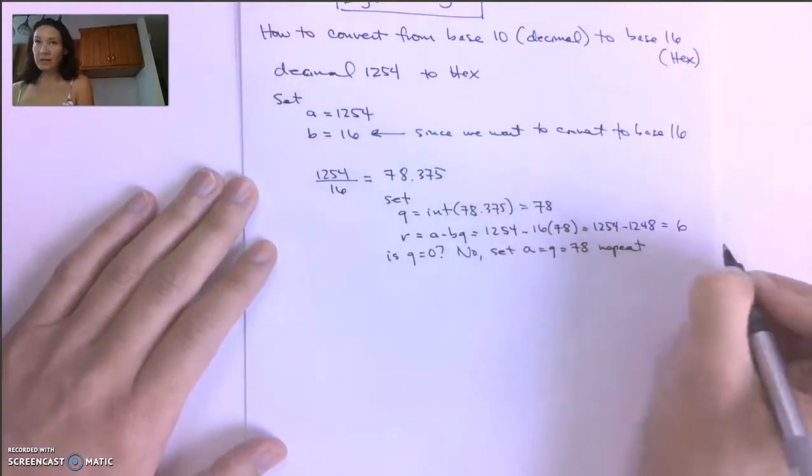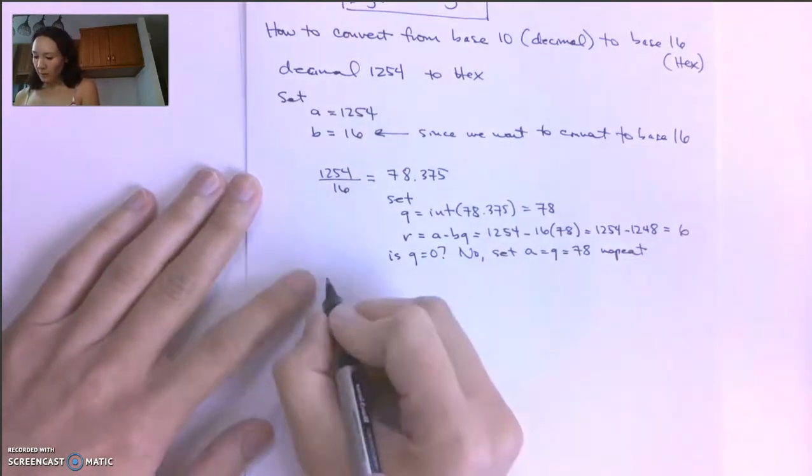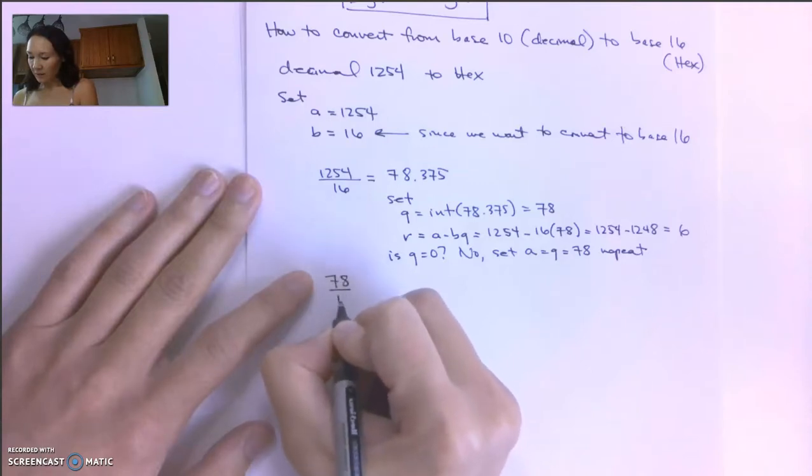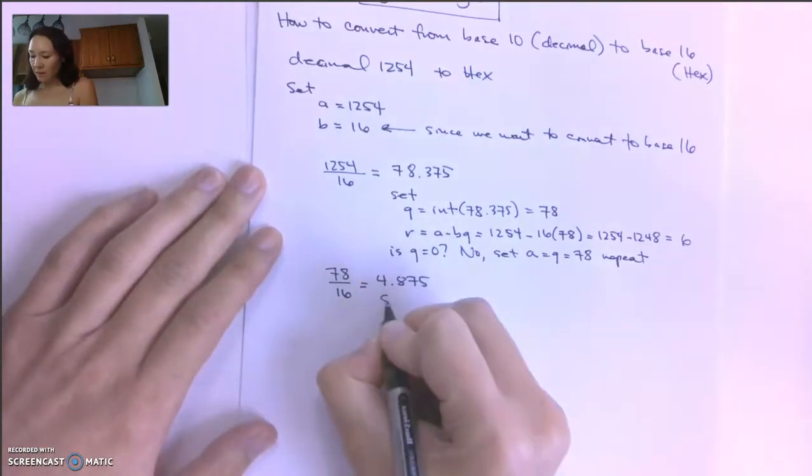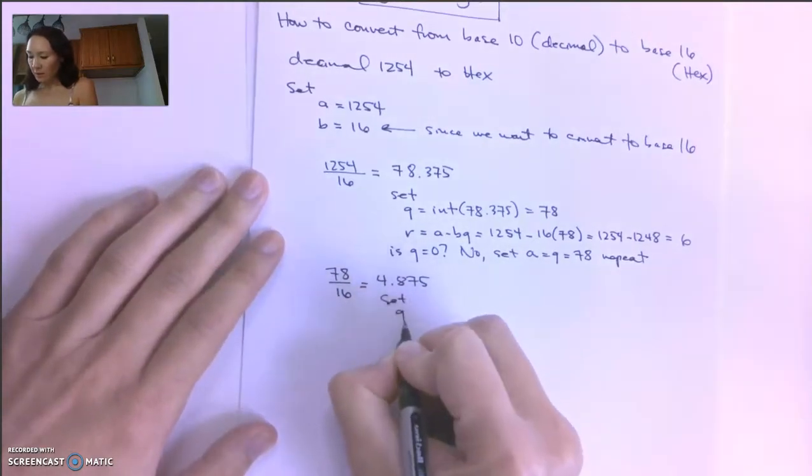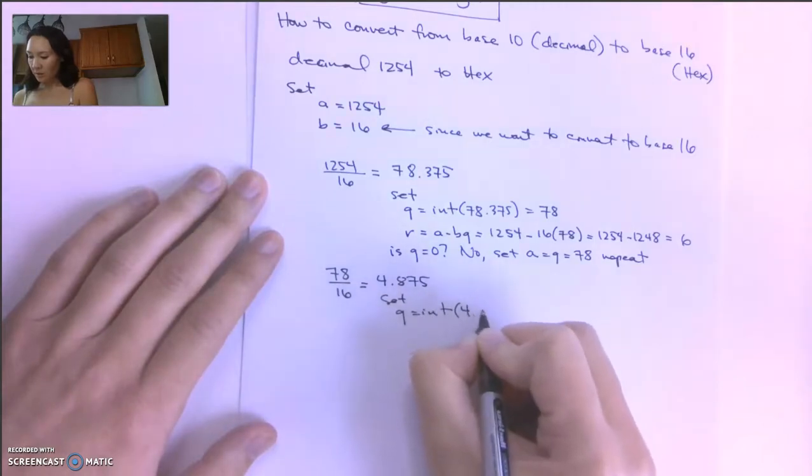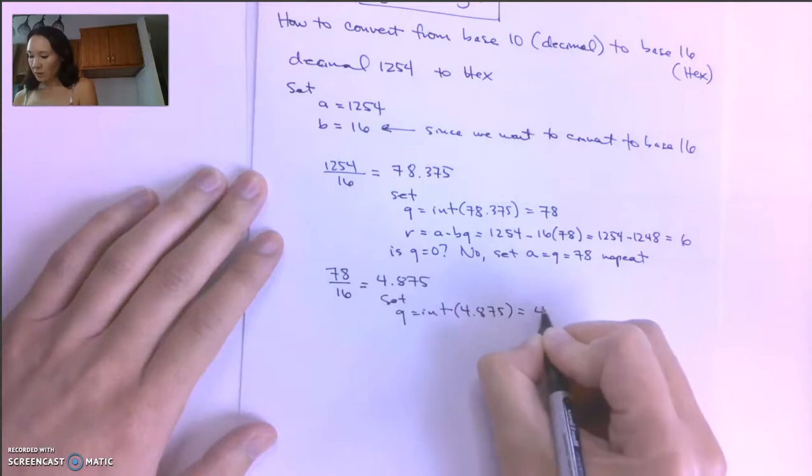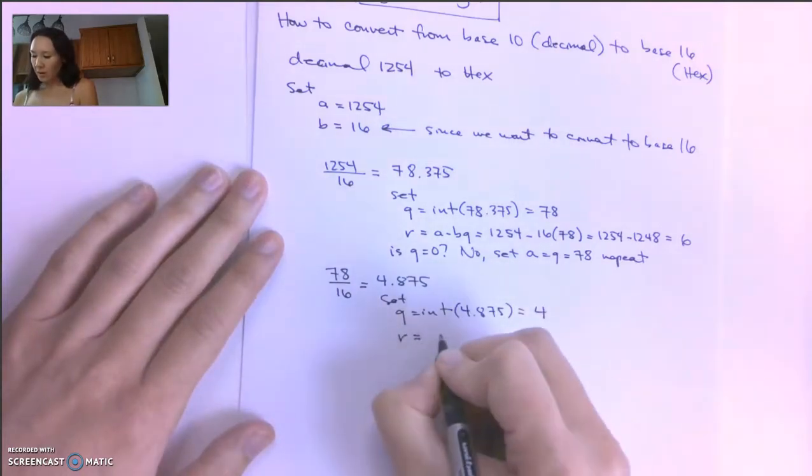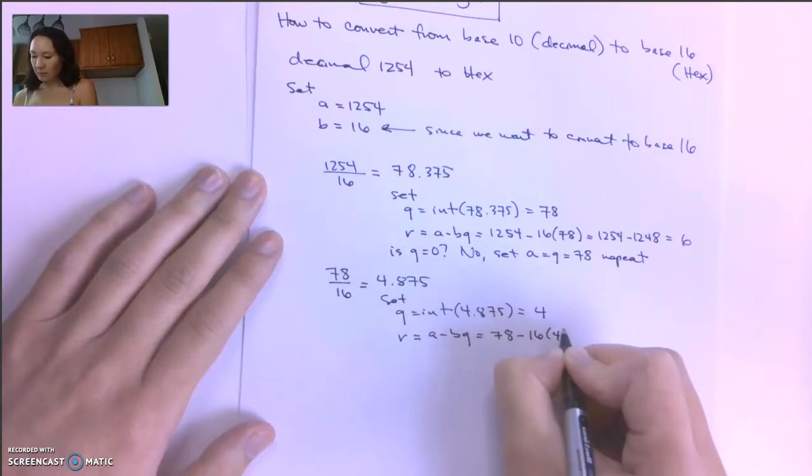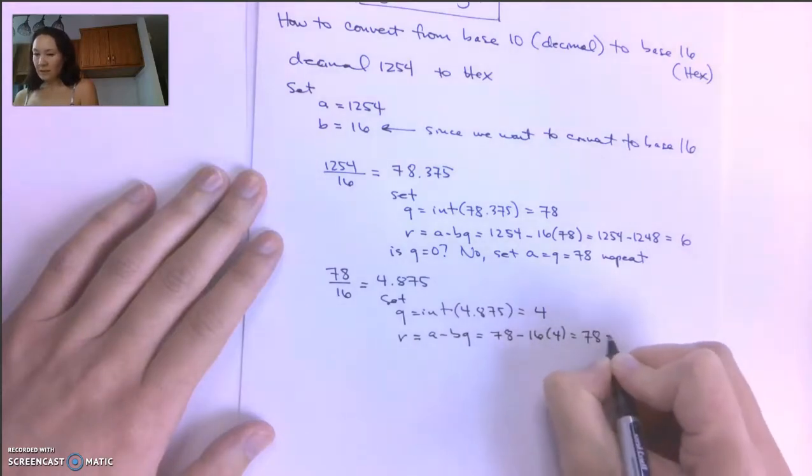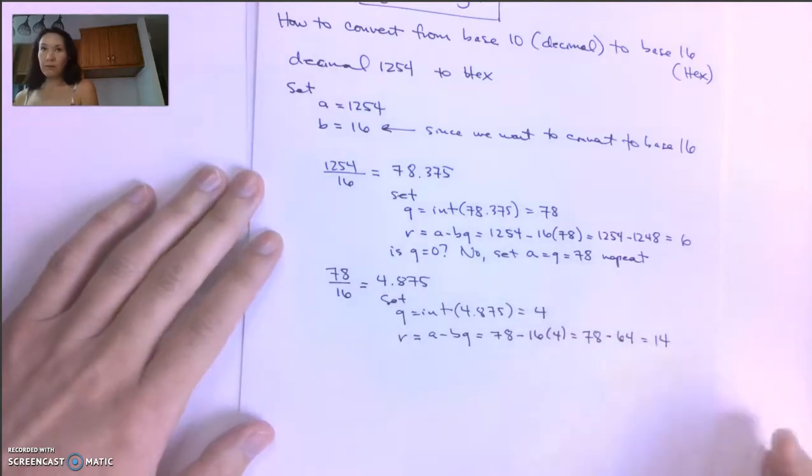We'll repeat the iterative algorithm. We're going to do this division again, but now A is 78. So 78 divided by 16 gives us 4.875. We set Q equal to the integer part of 4.875, that's just 4. And then we'll set R to A minus BQ. That will be 78 minus 16 times 4, or 78 minus 64, which is 14.